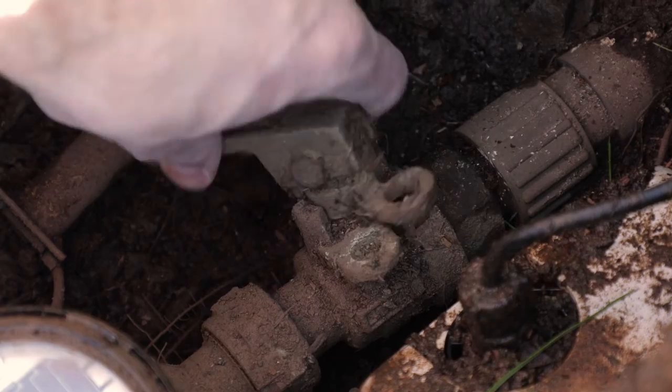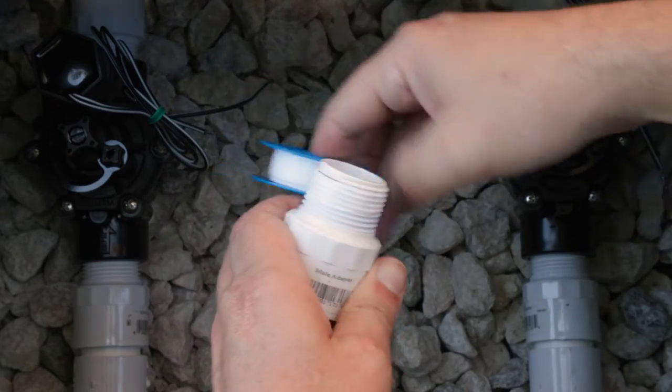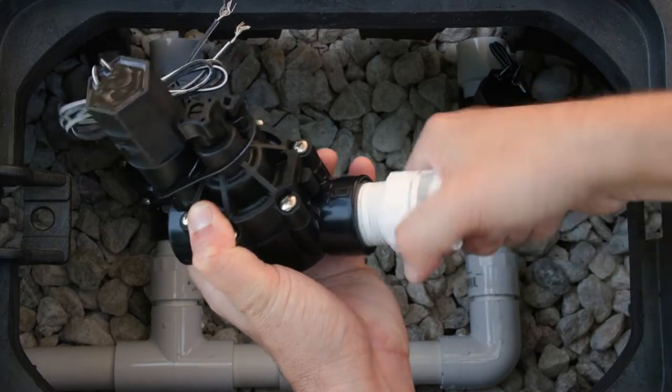First, shut off the main water supply to your irrigation system. Wrap a thin layer of PTFE thread seal tape around the threads of the pipe adapters and screw them into the valve's inlet and outlet.